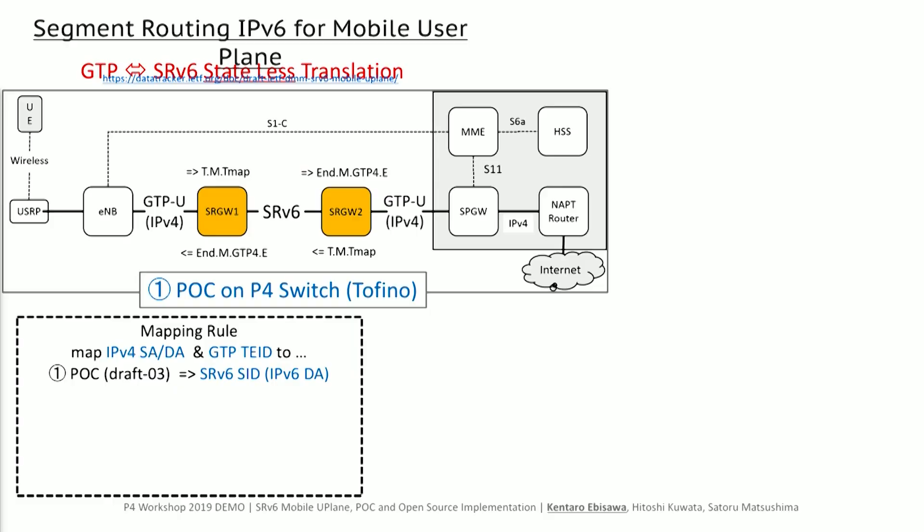I'm demoing the Segment Routing IPv6 from a mobile user plane demo. I'm Kentaro from Toyota. So what is SRV6? SRV6 is basically source routing plus some more features based on IPv6. Those who attended yesterday's advanced course should already be familiar. SRV6 is discussed as one of the candidate protocols for next generation 5G mobile user plane protocol in 3GPP.